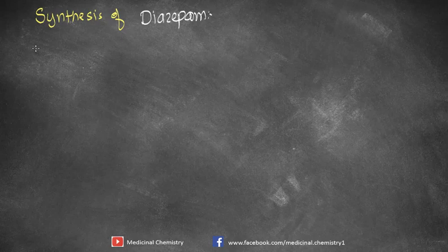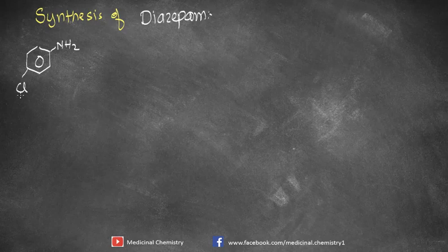The starting point for the synthesis of Diazepam is 4-chloroaniline, which has an NH2 group and a chlorine substituent on the benzene ring.